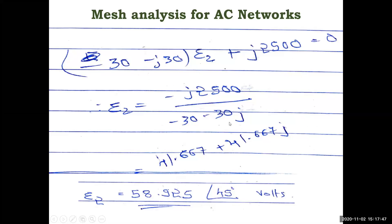So we have converted the complex expression to rectangular form and then to polar form: 58.925∠45°. Since E1 was given as 50∠0° volts, similarly E2 = 58.925∠45° volts. The 45° is the phase angle. That is how to solve an AC network mesh analysis problem.